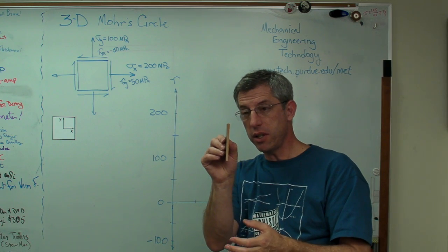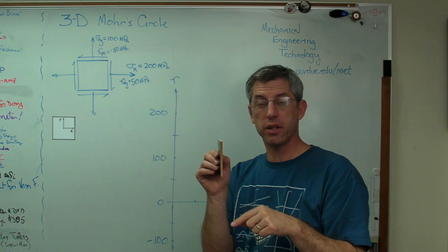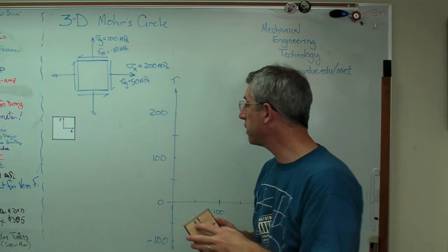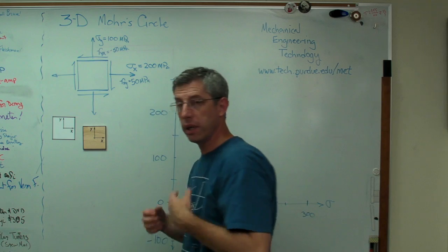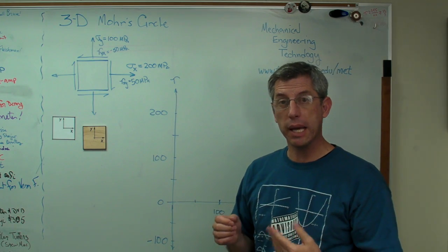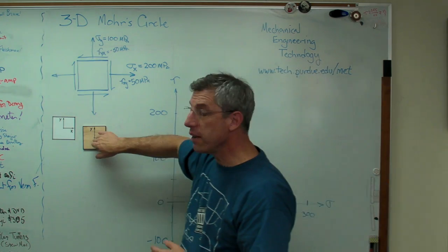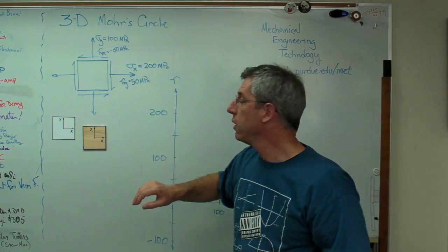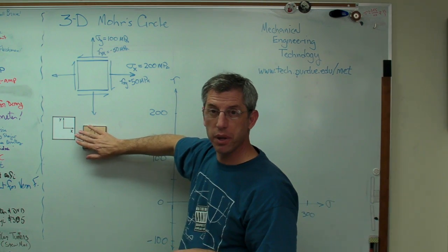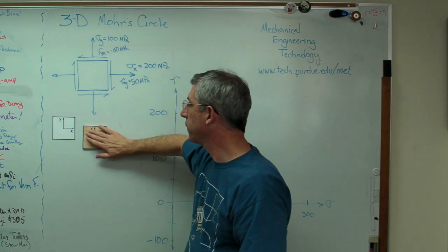It means there's no stress in the z direction. There is a z dimension now, but the stress in the z direction, sigma z, is zero. That's what plain stress means. Now, there's a related concept called plain strain, where there's no strain in the z direction, but there may be stress. So this is not that. This is plain stress. It's related to plain strain, not the same thing though.